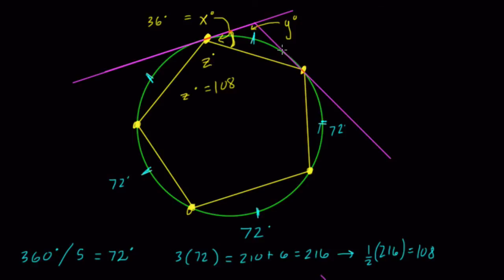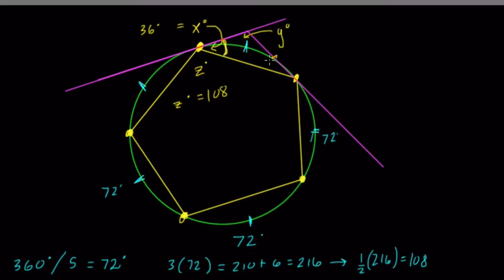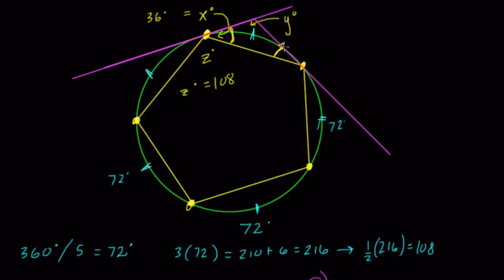This angle over here is also half of the same arc, so it's also 36 degrees. Y is the remaining degrees. Y equals 180 minus 72 degrees. 180 minus 70 is 110, minus 2 more is 108. So Y equals Z, both are 108 degrees. Thanks.